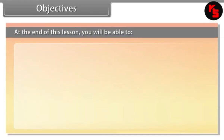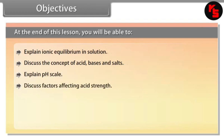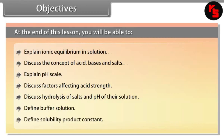Objectives. At the end of this lesson, you will be able to: explain ionic equilibrium in solution; discuss the concept of acids, bases, and salts; explain the pH scale; discuss factors affecting acid strength; discuss hydrolysis of salts and pH of their solutions; define buffer solution; and define solubility product constant.